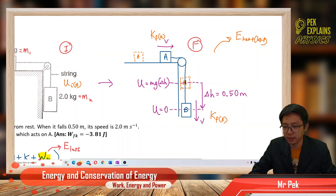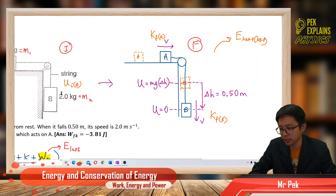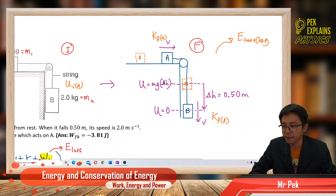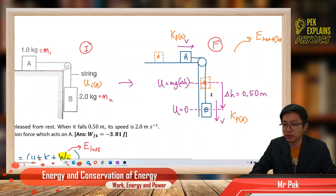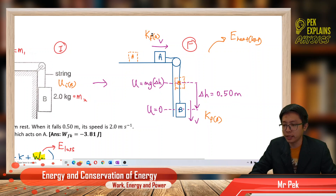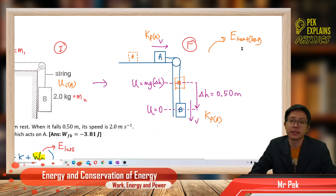Above 0.5 meter, it has potential energy Mg delta H, where delta H is the difference in height: 0.5 meter. So initially, block B has gravitational potential energy Mg delta H. After block B falls, block A gains kinetic energy, block B gains kinetic energy, and there is some energy loss as heat.